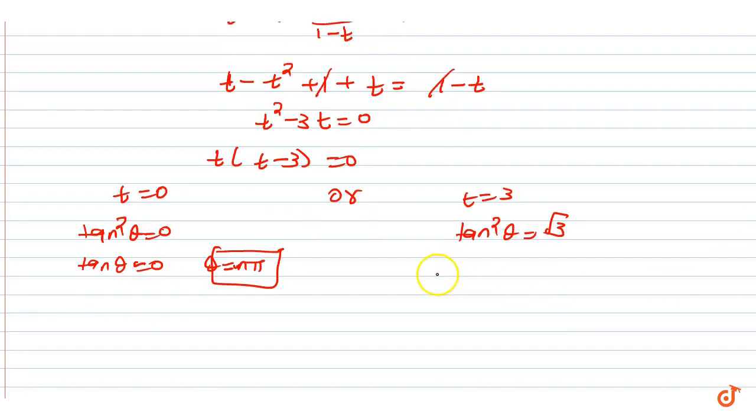Now here what will happen? Tan theta equal to plus minus root 3. Now if I take root, then this thing will be plus minus root 3. This thing will be 3. And then it will be root 3, plus minus root 3. So answer will be theta equal to n pi plus minus pi by 3. So here we will have two solutions.